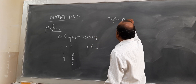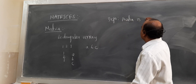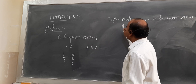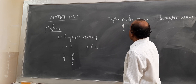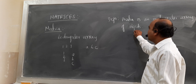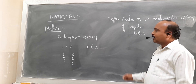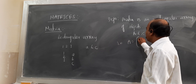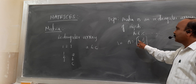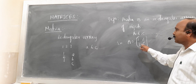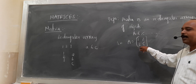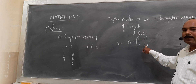A matrix is a rectangular array of objects. Matrices are usually denoted by capital letters A, B, C and so on. For example, A equal to [1, 2; 3, 5] is one matrix. Here 1, 2, 3, 5 are called elements of matrix A. Elements 1 and 2 are called elements of the first row; 3 and 5 are elements of the second row. 1 and 3 are elements of the first column; 2 and 5 are elements of the second column.